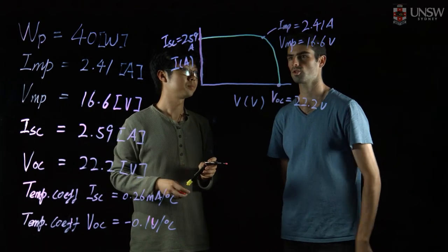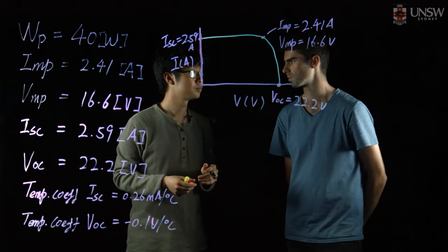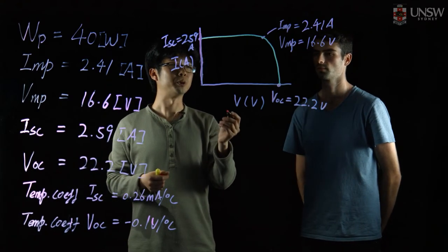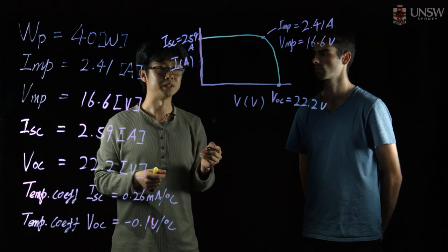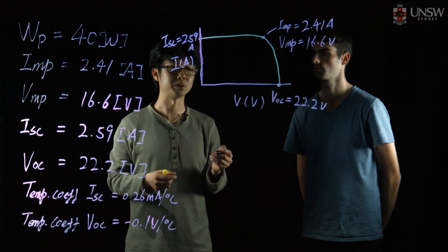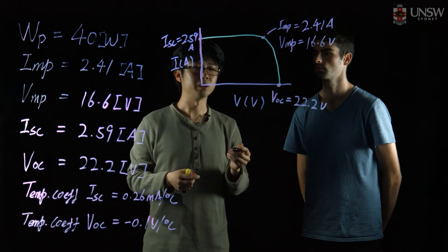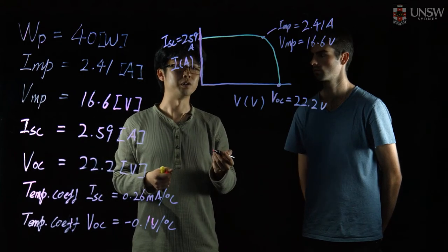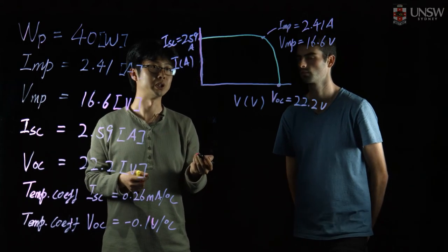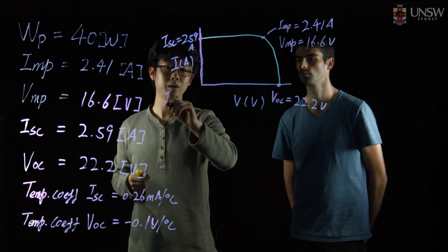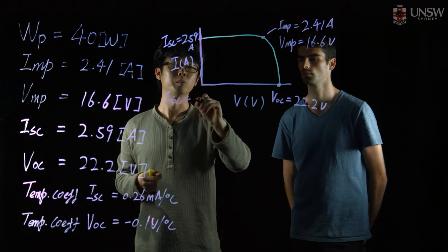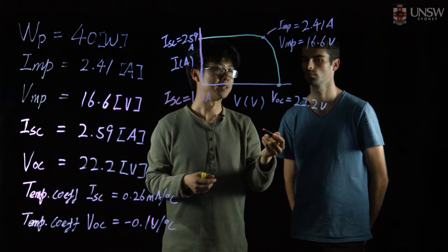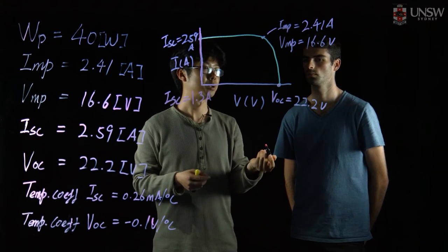Would you be able to show what this particular curve would look like under 500 watts per meter squared irradiance as opposed to standard test conditions? This IV curve we drew previously is under standard test conditions at solar irradiance of 1000 watts per meter squared and a temperature of 25 degrees Celsius. When the solar irradiance is reduced by 50% to 500 watts per meter squared, the current of the PV module also reduces proportionally, so the short circuit current will be somewhere around 1.3 amps. But the voltage stays the same, so the open circuit voltage remains at 22.2 volts.